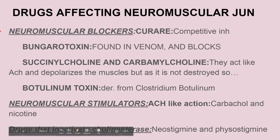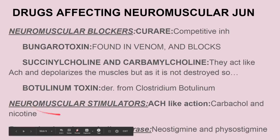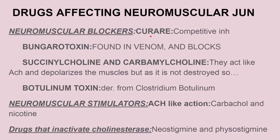Now, drugs affecting the neuromuscular junction. The NM junction is affected by blockers and stimulators. In the blockers, they mainly include curare or tubocurare. These are competitive inhibitors of acetylcholine and compete with acetylcholine for binding with the acetylcholine receptor — the nicotinic receptor — on the postsynaptic membrane. If the amount of tubocurare in the body is more than acetylcholine, this drug will bind with the acetylcholine receptor and inhibit the formation of the end plate potential, and thus the impulse is not transmitted.